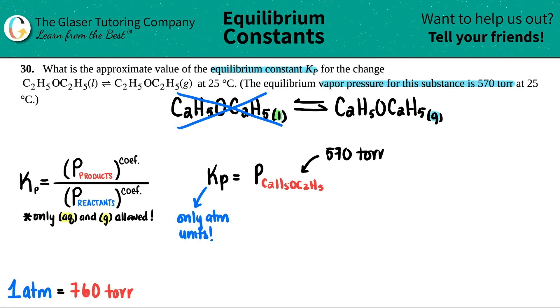So let's just convert this out: 570 torr times by a ratio - we've done tons of these, right? Torr goes on the bottom, atm goes up on the top: 1 atm equals 760 torr. Let's cancel out that torr, and now we get the number in atm: 570 divided by 760.